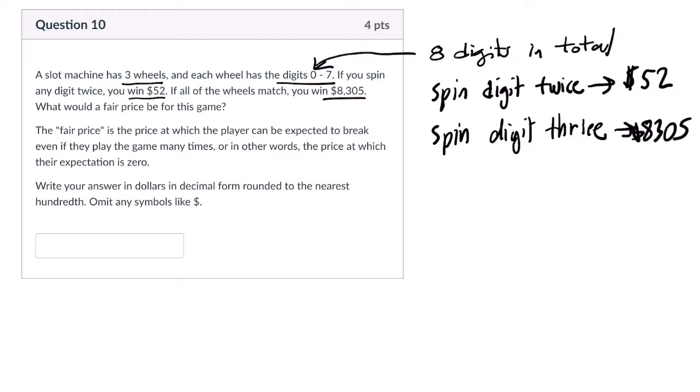And we want to know what the fair price would be. So that means expected value is 0. Fair, how much should players play so that over time, neither the house or the players have an advantage? How do we do that?